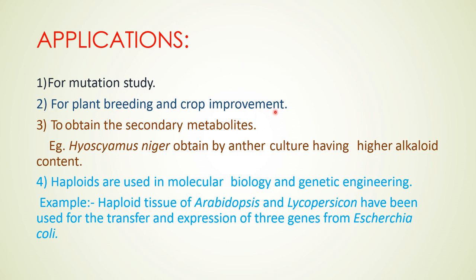Applications of anther and pollen culture: it is used for mutation study, plant breeding, and crop improvement. It is also used to obtain secondary metabolites. Haploids are used in molecular biology and genetic engineering. Haploid tissue of Arabidopsis and Lycopersicum have been used for the transfer and expression of foreign genes from Escherichia coli.